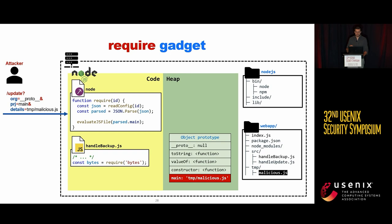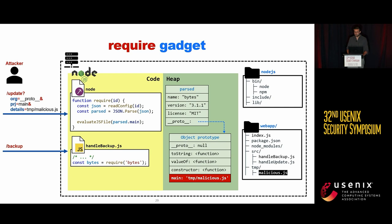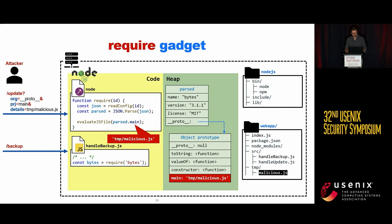To exploit the gadget, we need a require function call for a package without the main property defined. An example of such a package is the bytes package. When the attacker triggers the backup handler, it parses the config file of the bytes package. Since the main property is undefined, it looks up the value from the prototype. To achieve remote code execution, the attacker must control a malicious file — meaning they need to be able to upload some malicious file to the local system. This is a strong requirement.